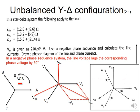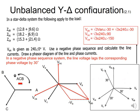Once that is done, I write out the line voltages explicitly. Vab equals the square root of 3 multiplied by van at minus 30 degrees. Then vbc equals root 3 times 240 at 90 degrees, and vca equals root 3 times 240 at minus 150 degrees.